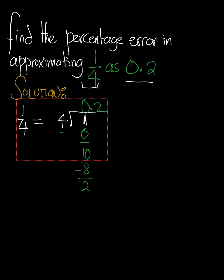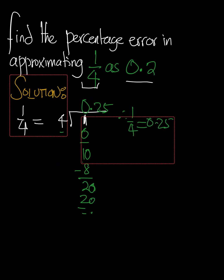4 still cannot go into 2. Because we've already introduced a 0 at the top and a decimal point at the top, we're going to add 0 to this number here. 4 multiplied by 5 is what gives us 20. Therefore, 1 over 4 is the same as 0.25. But the question is saying there was a percentage error that treated 1 over 4, which is 0.25, as 0.2.